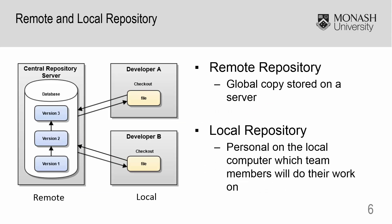Now that we know how Git can keep track of versions, how does it allow us to work collaboratively? Essentially there are two types of repositories: the local repository and the remote repository. The remote repository is the repository which is stored on a server, and is the global copy for all the team members to use and update from.